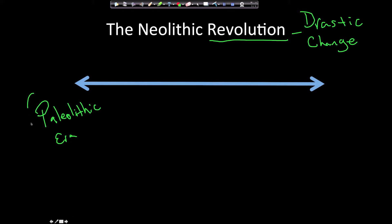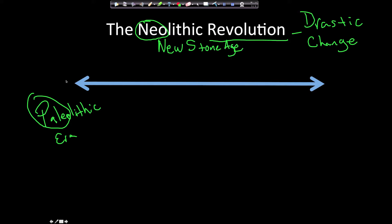Paleo means old, so we have the Old Stone Age. Neolithic means new — neo means new — so we have the New Stone Age. On the timeline, the Paleolithic Era runs from about 2 million BC all the way up to around 10,000 BC.